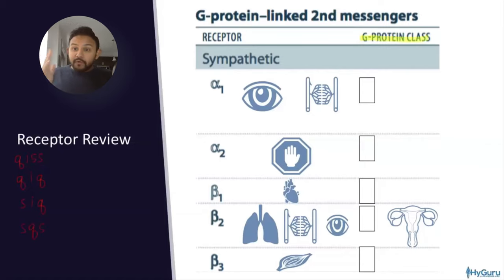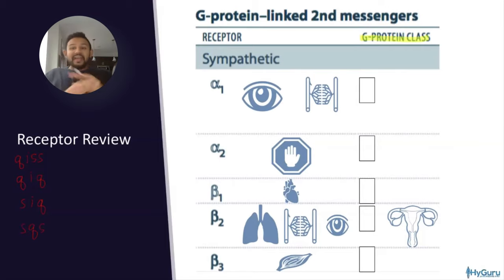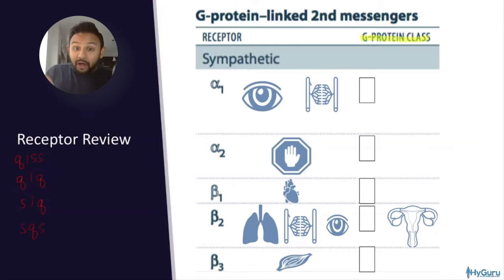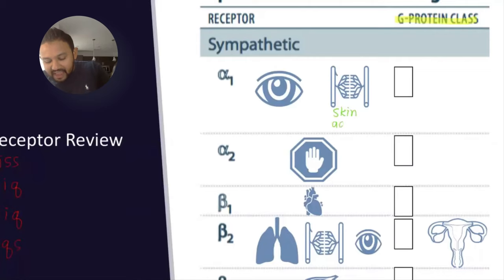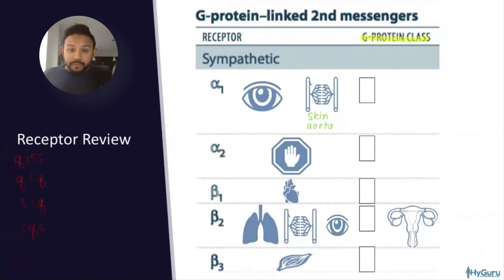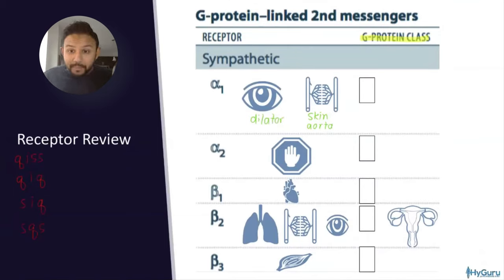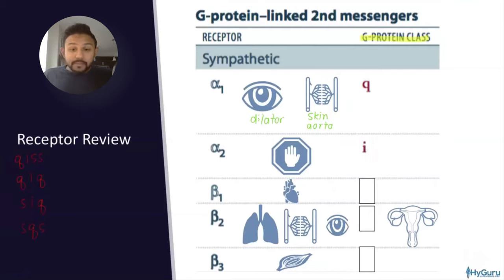Alpha-1 is Gq. Alpha-2 is Gi and inhibits sympathetic outflow — if you have alpha-2 agonism you get less epinephrine and norepinephrine coming out of the synapse. Beta-1 is found in the heart and is Gs related. Beta-2 is found in many areas — specifically the lungs and bronchi, and vascular smooth muscle in the muscle area. Think of it this way: sympathetic fight-or-flight means you want blood going to your arms, legs, and buttocks, so vascular smooth muscle dilation is key for beta-2.